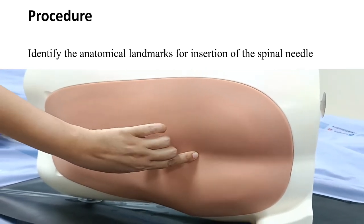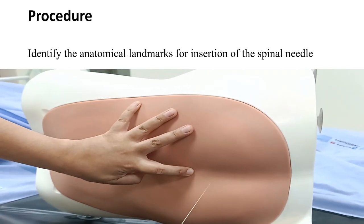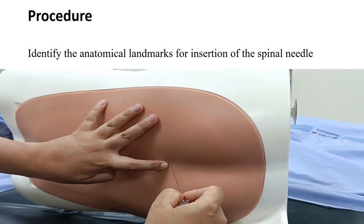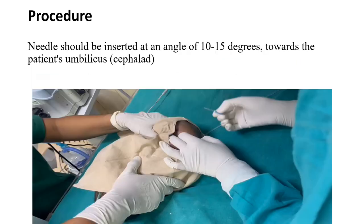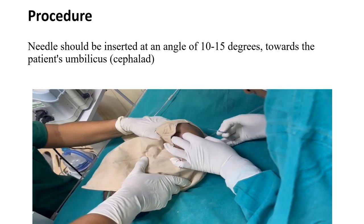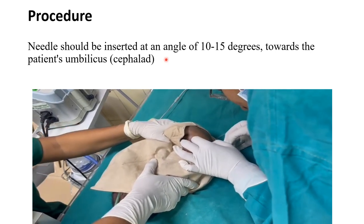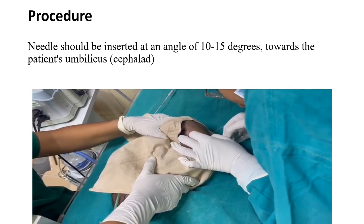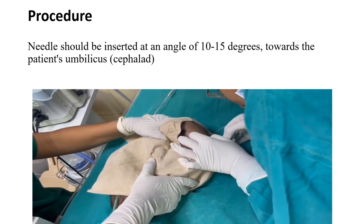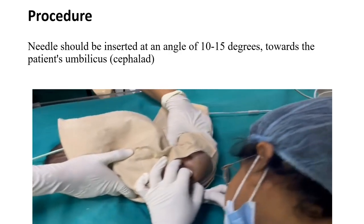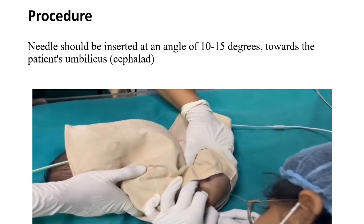Insert the spinal needle in this space. The direction of the needle should be cephalad, towards the umbilicus, at an angle of 10 to 15 degrees. In this video you can see she is inserting at an angle of 10 to 15 degrees towards the patient's umbilicus. Here in this newborn we are using the 24 gauge one-inch needle for CSF collection.